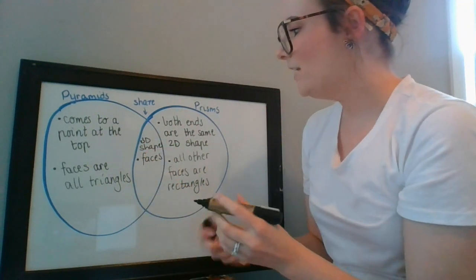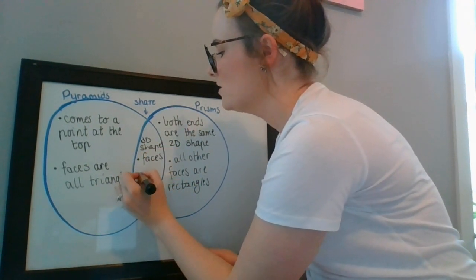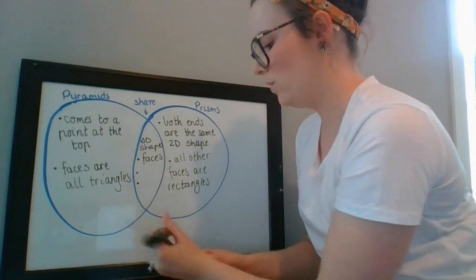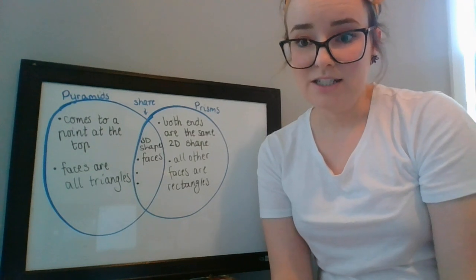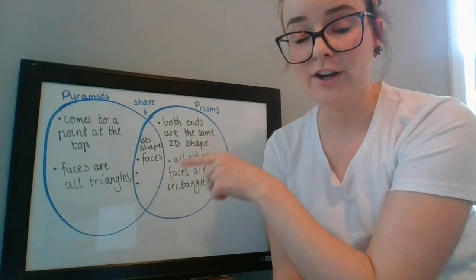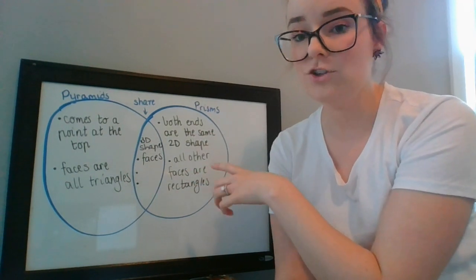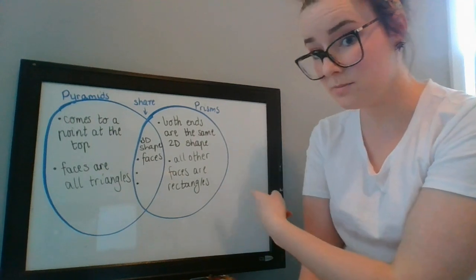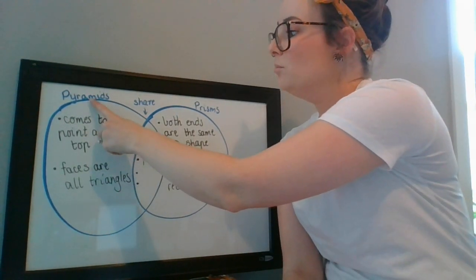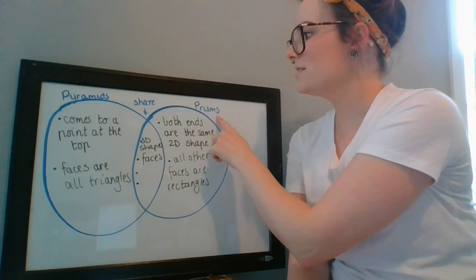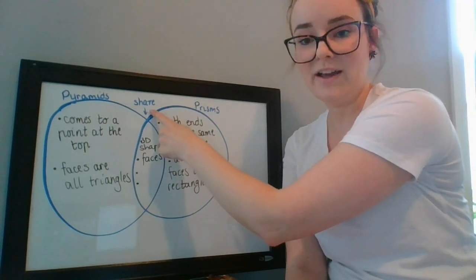Now I know that there is definitely another at least two things in there as well. So your job now for your activity today is have a go at drawing your Venn diagram. Making sure that your circles are pretty big because mine fill up nearly my whole page. Labeling them with the pyramid and the prism on either side. And in the middle is where we share our information.